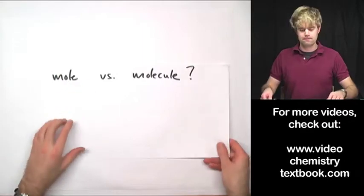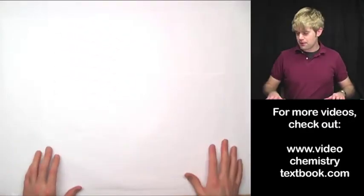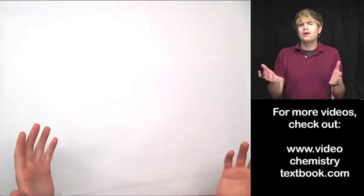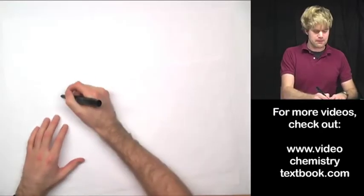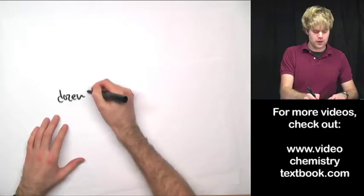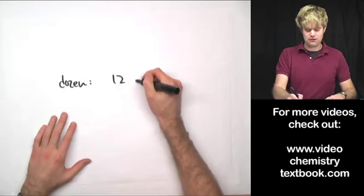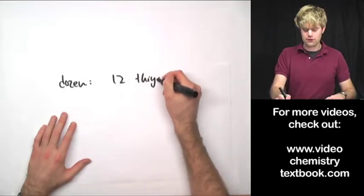Let's start with a mole. A mole is a number that we use to count things with. You're already familiar with some stuff like this, right? One number we use to count things is the dozen. A dozen means that we have 12 things.